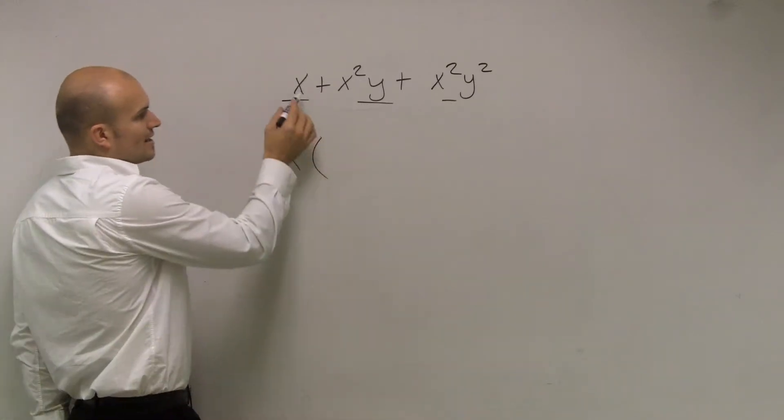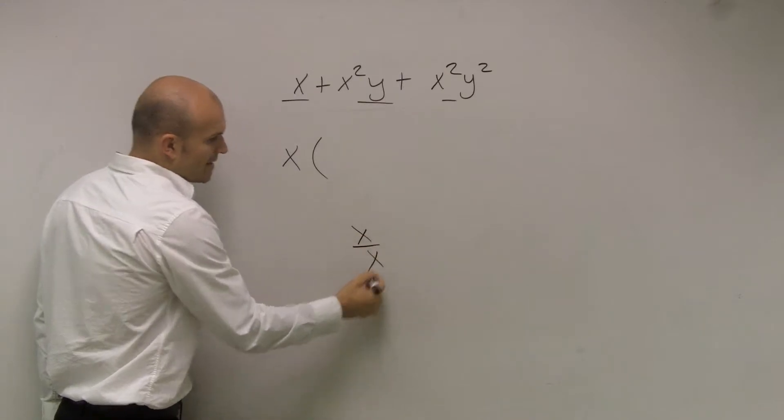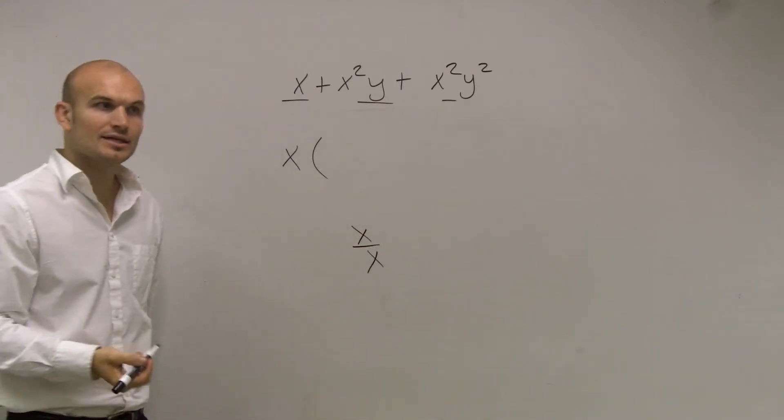So let's just look at it. x divided by x. What does that look like? Well, x divided by x equals 1.